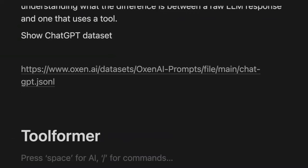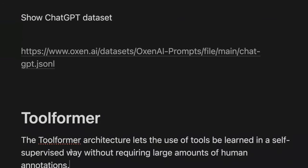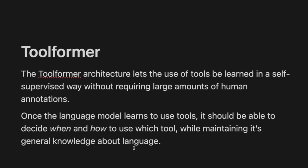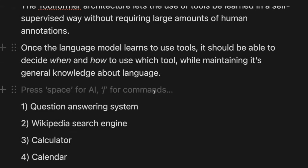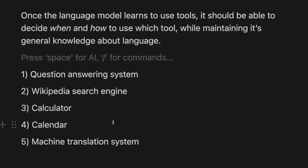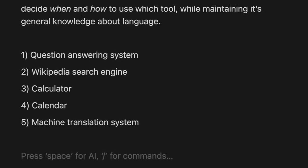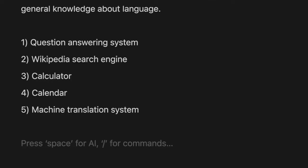The Toolformer architecture uses a self-supervised dataset that they create automatically without requiring a large amount of human annotations. Once the model is trained on this dataset, it should be able to, as it's predicting words in a sentence, decide when it needs to stop, use a tool, and then continue generating its solution. The tools they use in this paper are five: a question answering system, a Wikipedia search engine, a calculator, a calendar, and a machine translation system. In theory, you could have any set of tools — it's all about the training data you put into the system.